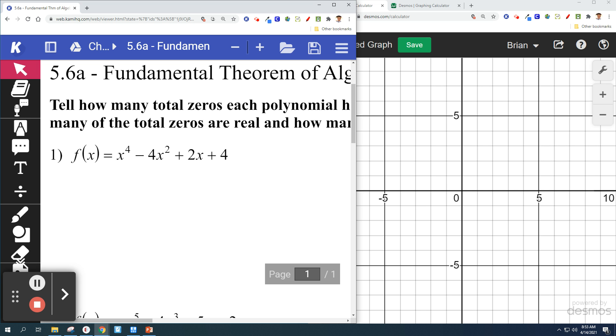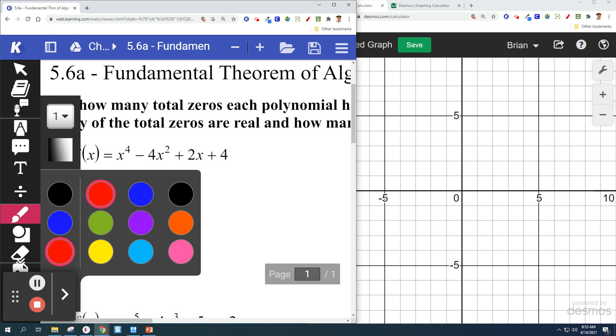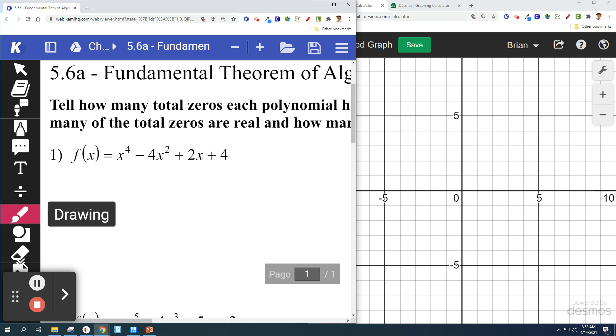So the first part of the question says tell how many total zeros each polynomial has. This is really pretty easy because you just look at the degree. When you see that this is a degree 4 or the biggest exponent on the x is 4, that tells me how many zeros there are. There are 4 total zeros.